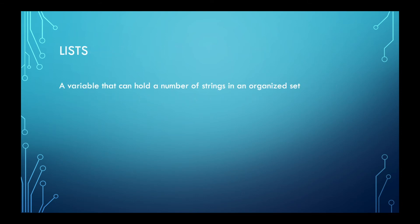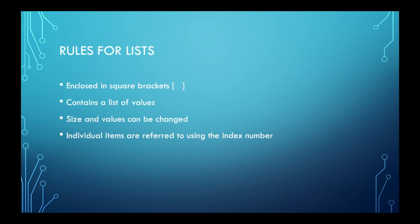Okay, so lists are variables that can hold a number of strings in an organized set. And fortunately, there's also rules for lists, but they are really easy. Usually, lists are written using squared brackets, and they contain a list of values. Obviously, you can always change the size and the value, which is a good thing. And individual items are referred to using the index number.